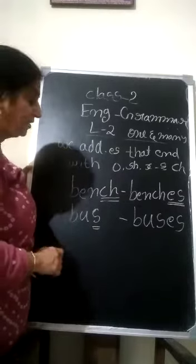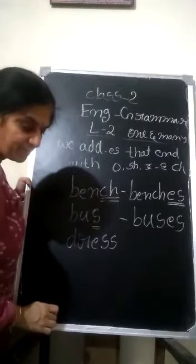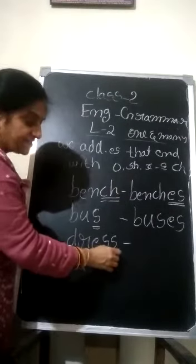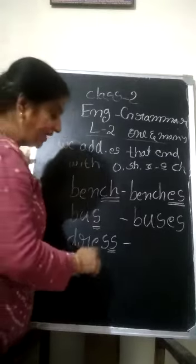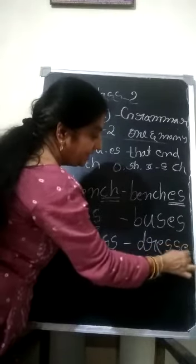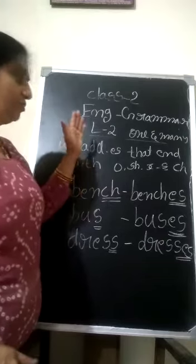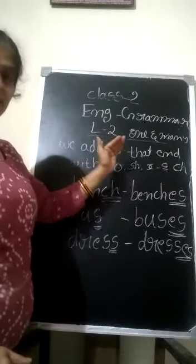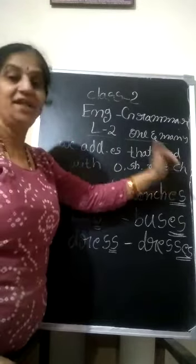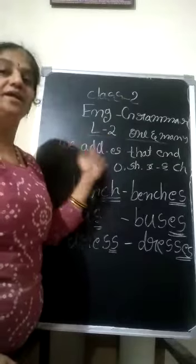For example, dress — you are wearing a dress. D-R-E-S-S. This word ends with S. So what do we have to do? We have to write dresses — D-R-E-S-S-E-S. We add ES. So, words ending with O, SH, X, S, or CH — we are going to add ES for those words.